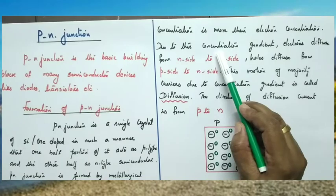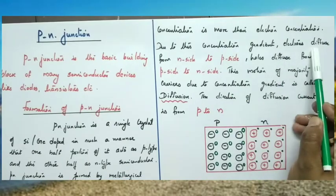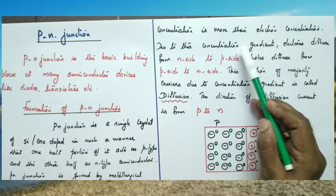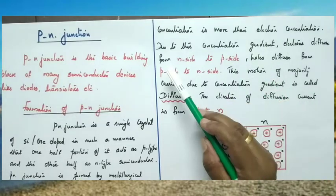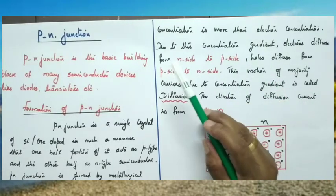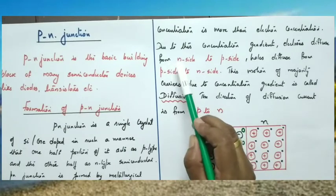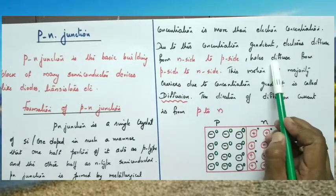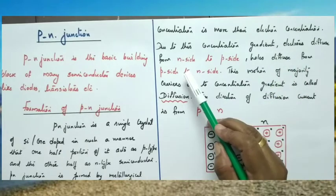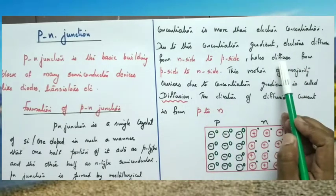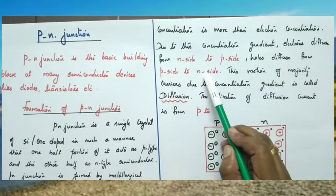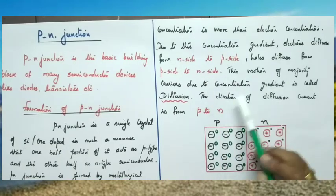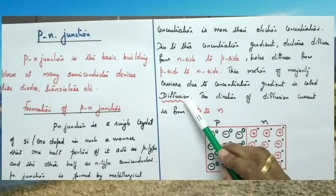Due to this concentration gradient, electrons move from higher concentration to lower concentration. So, electrons move from the N side to the P side. Similarly, holes move from higher concentration to lower concentration — hence holes move from the P side to the N side. This motion of majority carriers due to the concentration gradient is called diffusion.